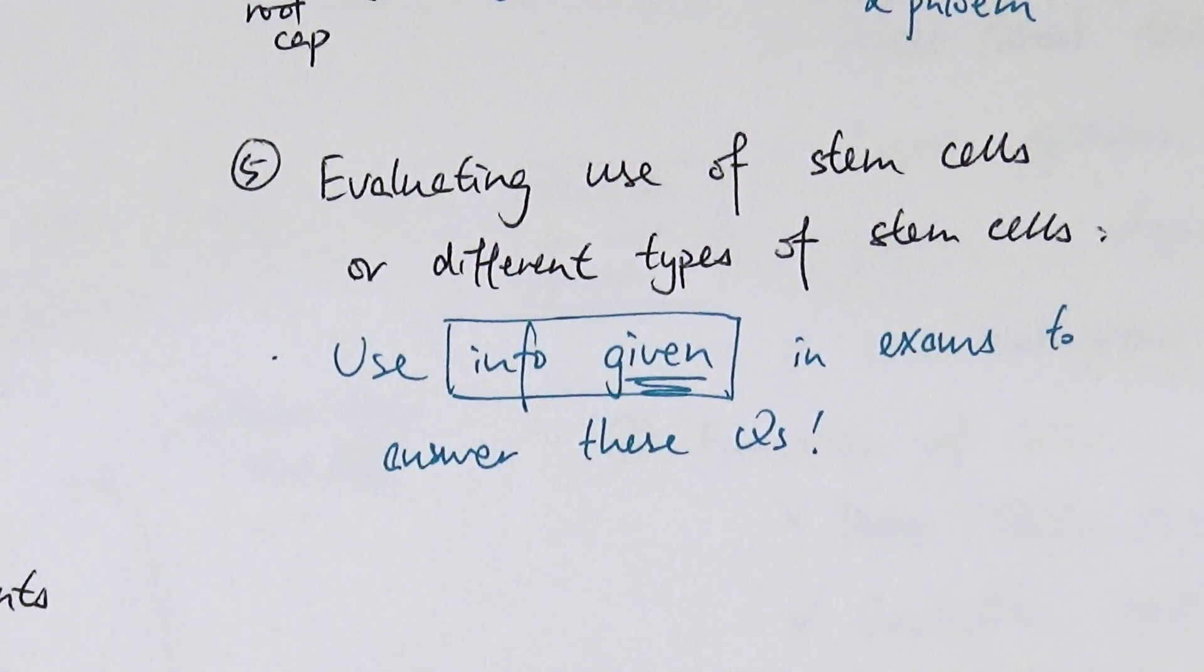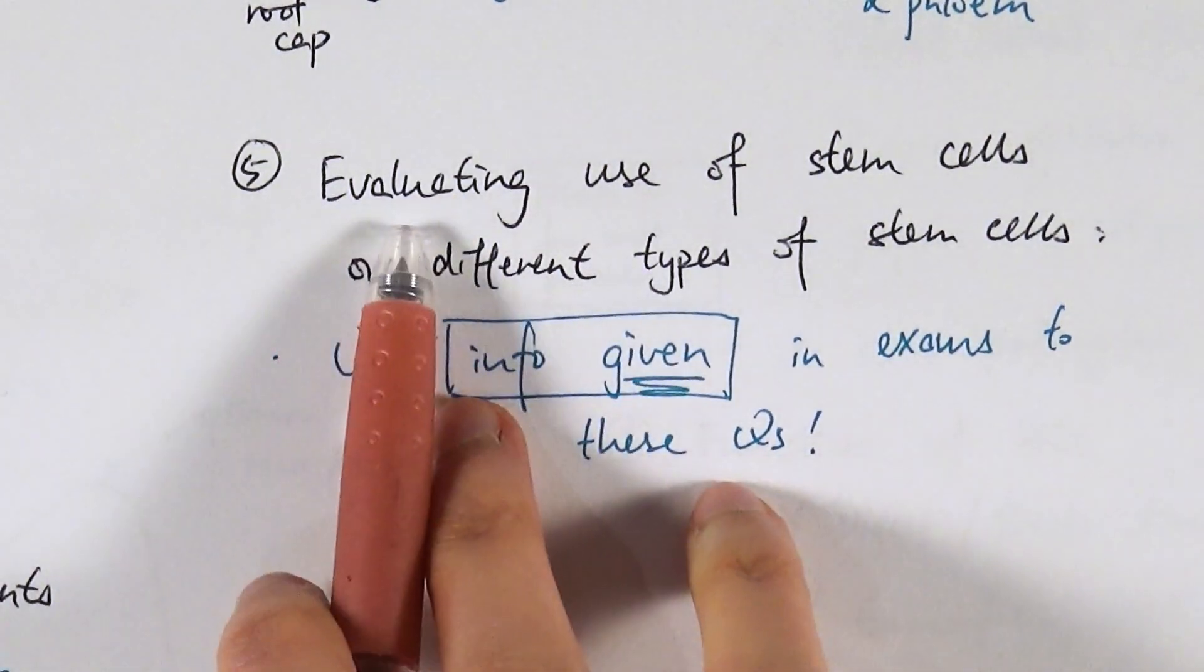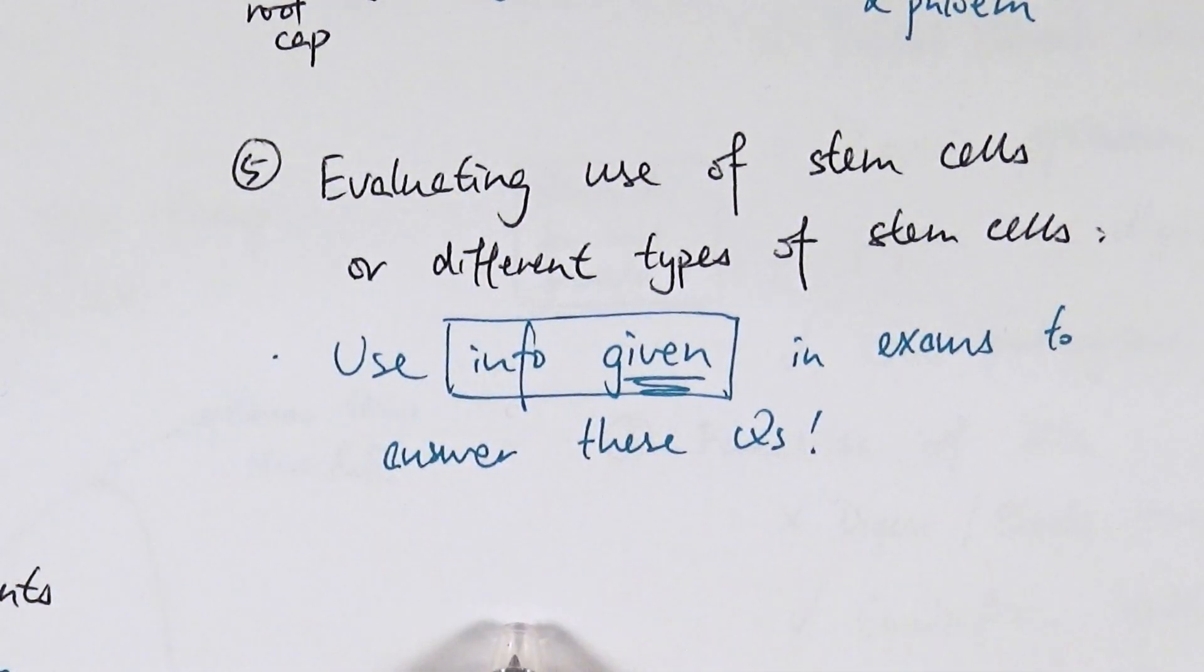Now, first of all, two things here. Number one, the evaluate, the word evaluate. This word means you have to say what's the good thing about it and what's the bad thing about it. So you have to say both the advantages and disadvantages of a particular thing.